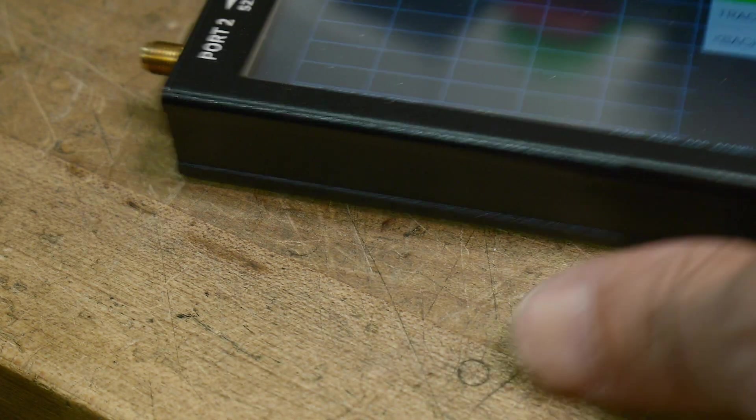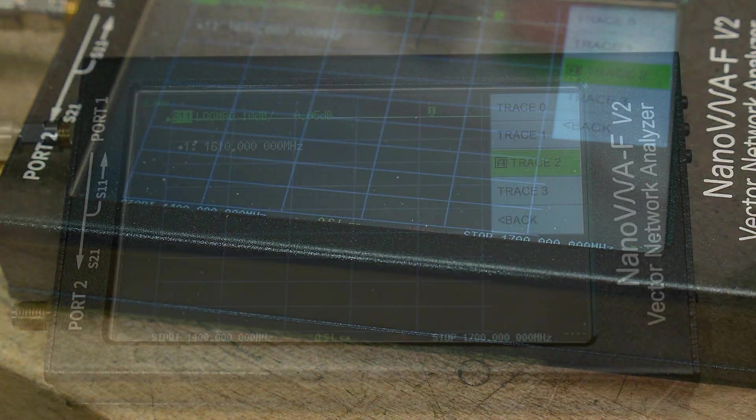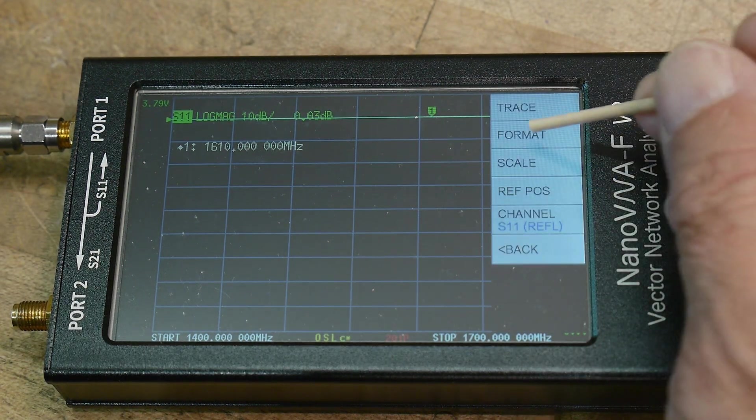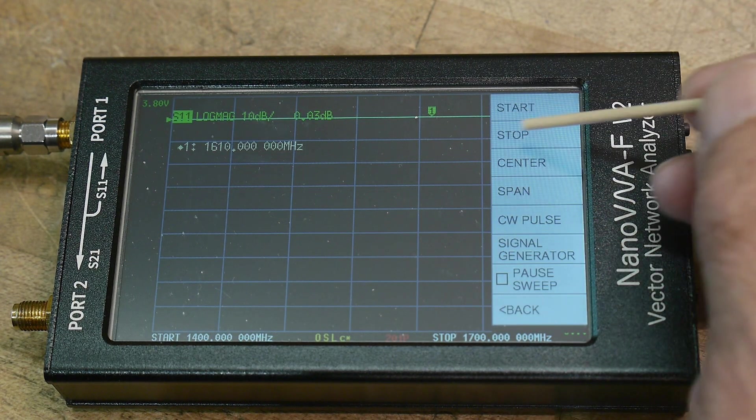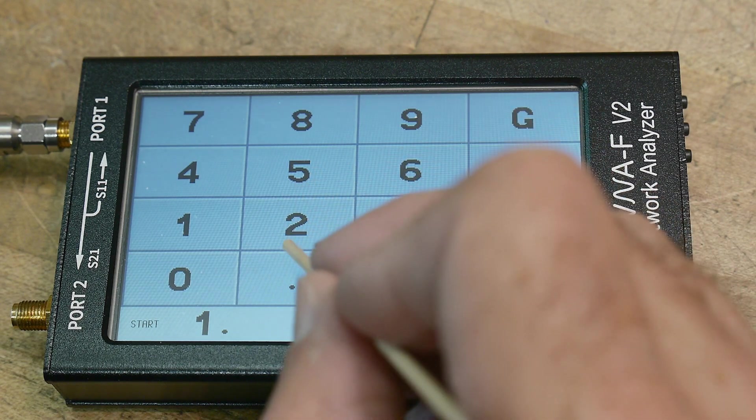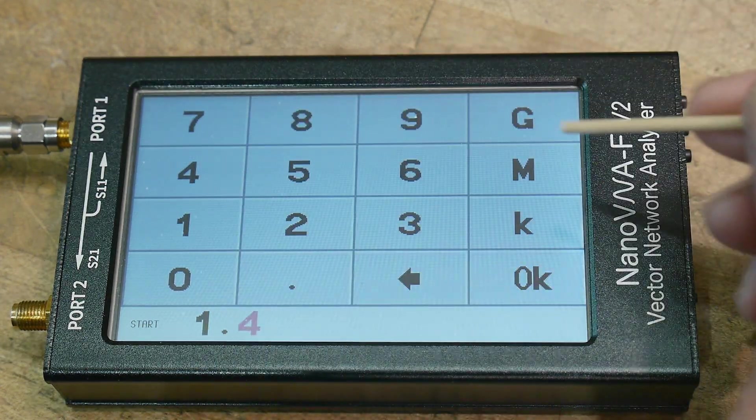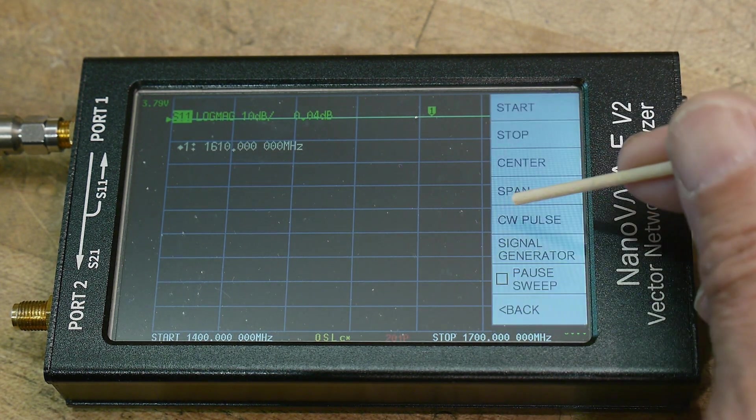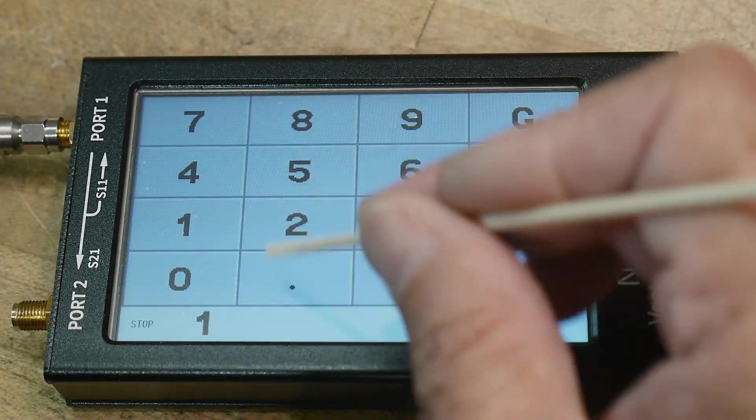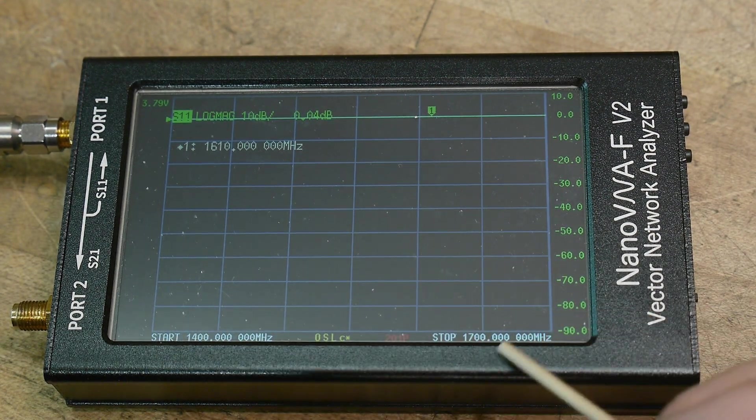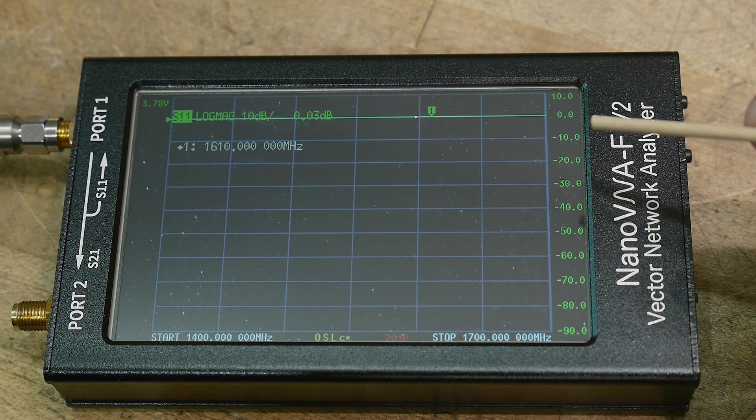Let's get out our nano VNA here. I'm going to move the camera a bit. I am going to set the stimulus. I'm going to set the start to 1.4 gigahertz and we'll sweep it to 1.7 gigahertz. So now we have a start and stop of 1.4 and 1.7 gigahertz, and we'll need to calibrate.